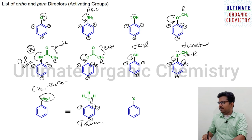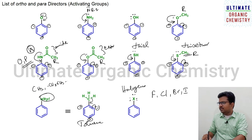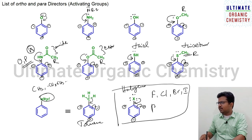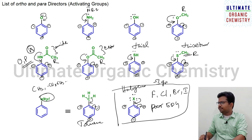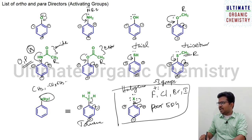Halogens (fluorine, chlorine, bromine, iodine) have three lone pairs and are rich in electrons, so they donate electrons to the benzene ring, enhancing electron density at ortho and para positions. However, compared to the rest of the functional groups, halogens are not as good donors — they are considered poor electron donors. Because halogens are more electronegative, they are minus-I groups and pull electrons through the sigma bond (minus-I effect), while also donating through the pi bond (plus-R effect). The inductive effect dominates, so halogens are poor electron donors, but they are still ortho-para directors.